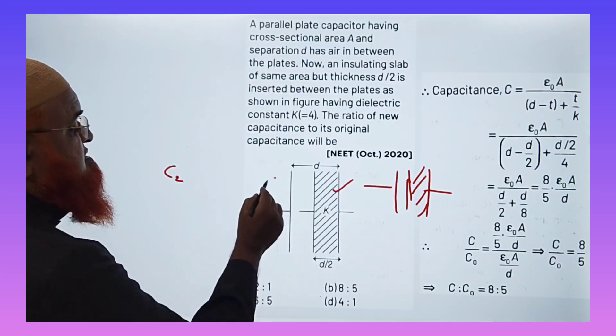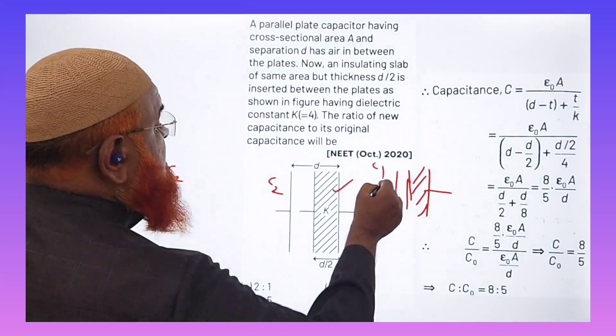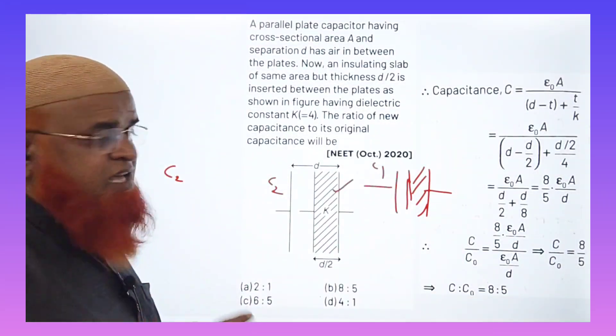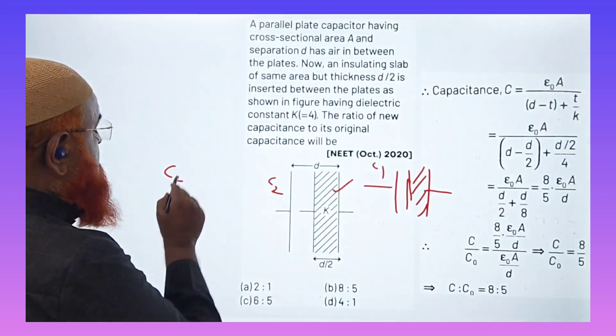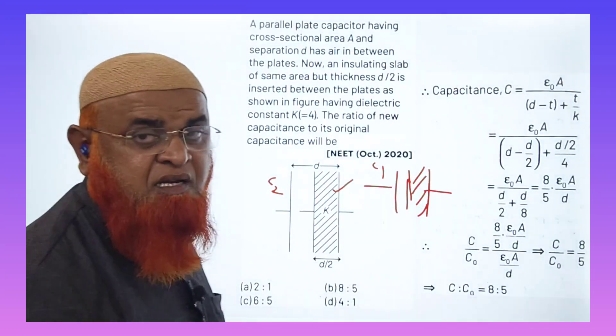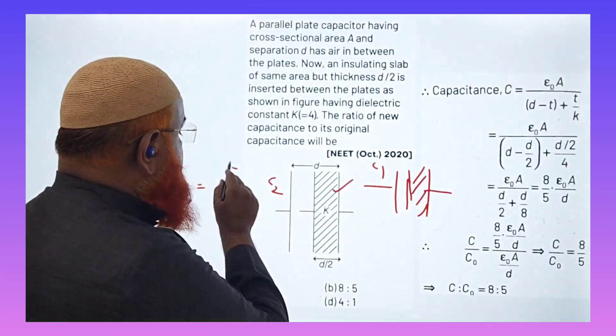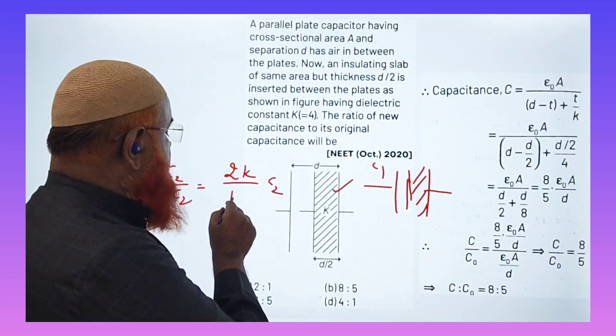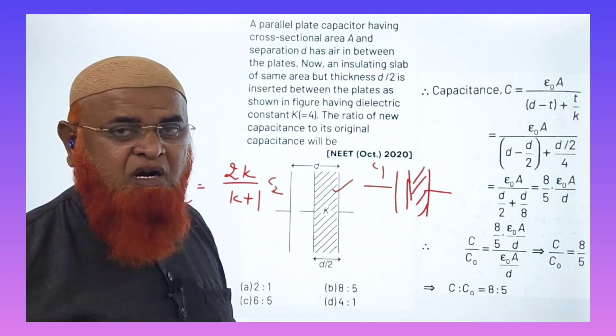The ratio—this is second. When it was empty, let us take it as first one capacitor. So you can write now, C2 by C1 is nothing but, you can write it as 2K by K plus 1. This is your shortcut formula.